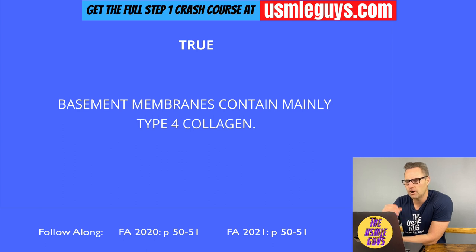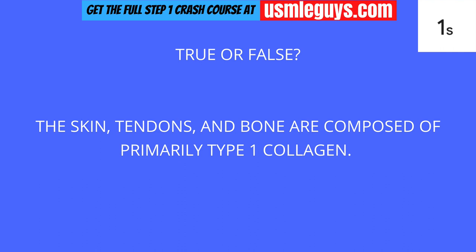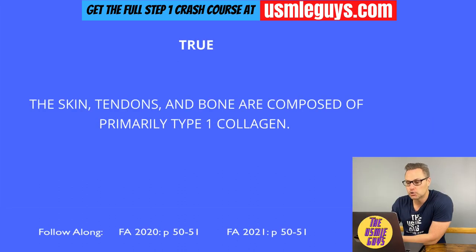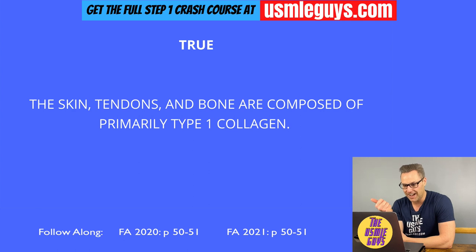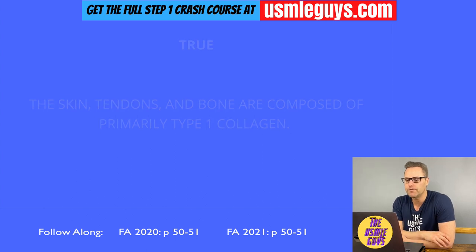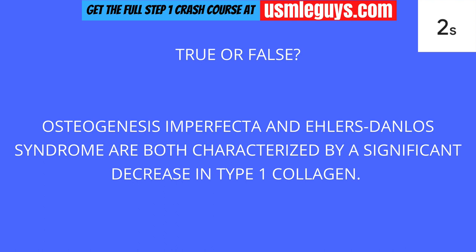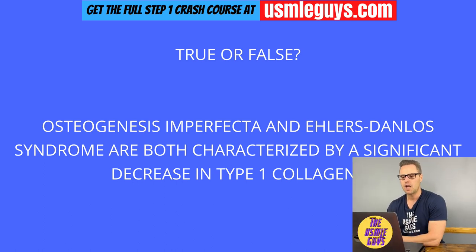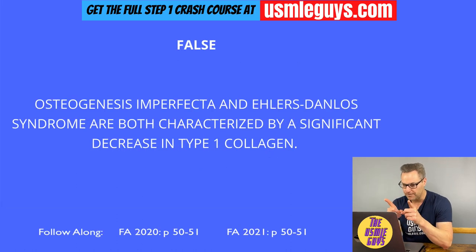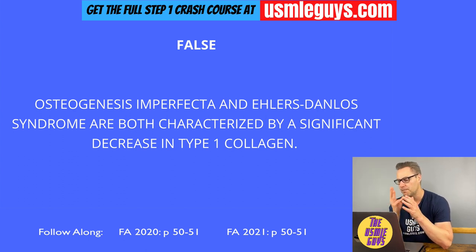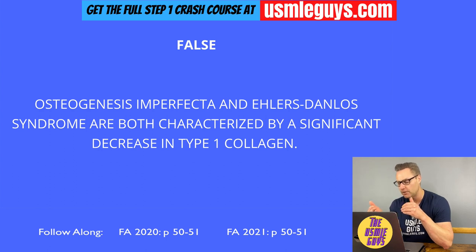The most common collagen in the body is type 1, found in bone, skin, tendon, dentin, fascia, and cornea — also involved in late wound repair. Next question — this is false. Osteogenesis imperfecta is due to decreased production of type 1 collagen, but Ehlers-Danlos syndrome — specifically the vascular type — is linked to a deficiency of type 3 collagen, while the classic type is linked to faulty type 5 collagen synthesis. Ehlers-Danlos has no involvement with type 1.